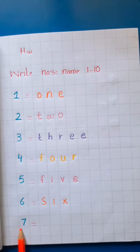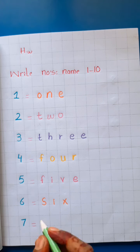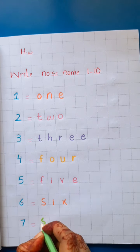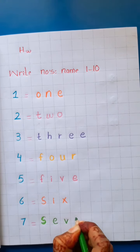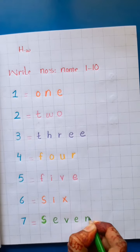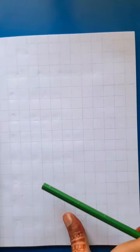Which number is this? Seven. What's the spell of seven? S-E-V-E-N. Seven. Now, we will write here the spell of seven. Seven. S-E-V-E-N. Seven. S-E-V-E-N. Seven.